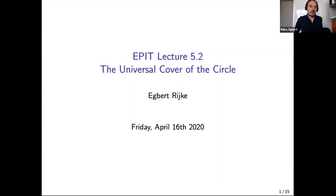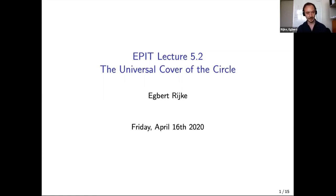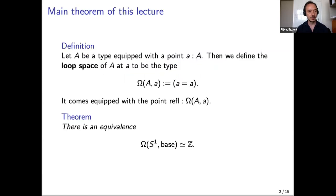I'm going to continue with the universal cover of the circle, lecture two. The main theorem in this lecture is that the loop space of the circle is equivalent to the type Z of integers.